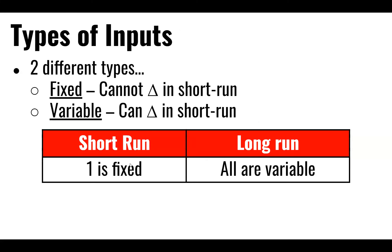When it comes to inputs, we generally talk about two different types: they're either fixed or they are variable. Fixed means we cannot change them in what's known as the short run — we are stuck with what we have. The short run is when at least one input is fixed. When all your inputs are variable, we are in what's known as the long run. The difference between those two will be important as we look at how markets adjust over time.